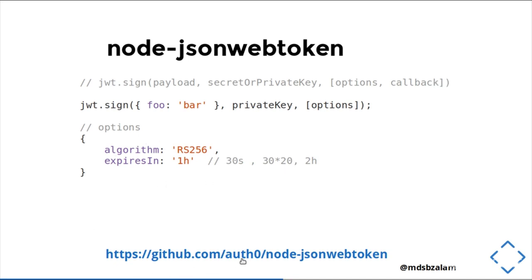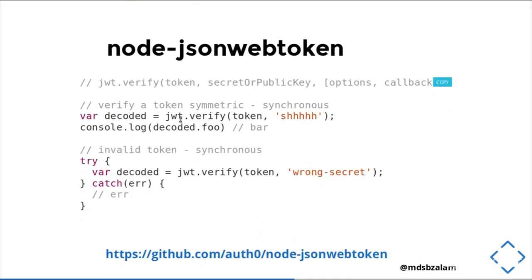You can find more detail at the Node JSON Web Token repo of Auth0. Once you sign your JWT, the next thing is how to verify whether it is legitimate. Once you sign, you will get a token. Using JWT.verify, you can decode it if you have the correct secret — this way it will print the data back. If you receive an invalid token, this is the try-catch for catching those errors using synchronous verification. You can find more detail at the Node JSON Web Token repo of Auth0.